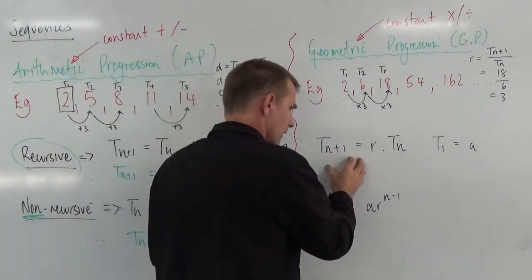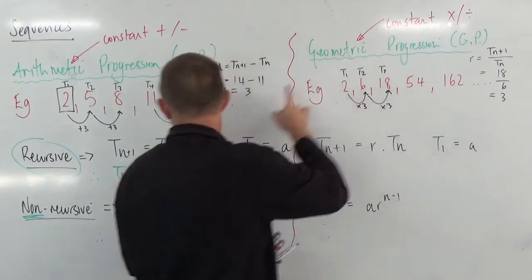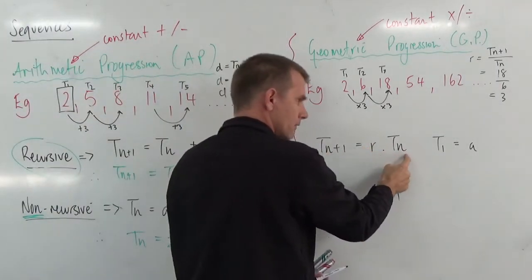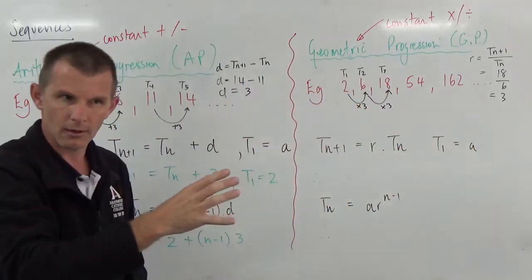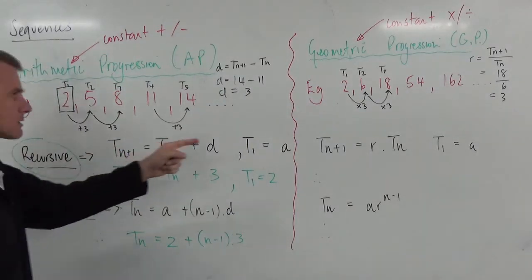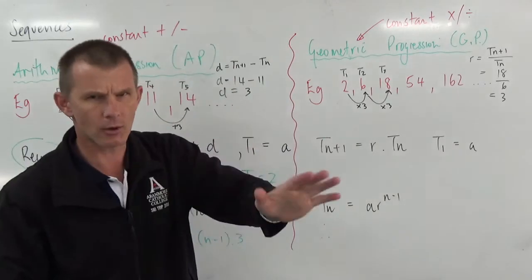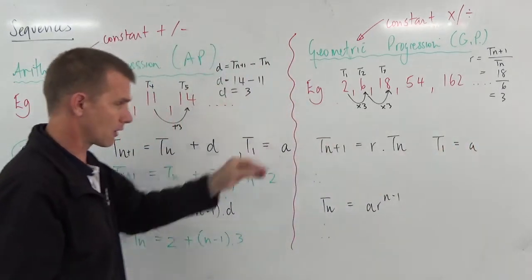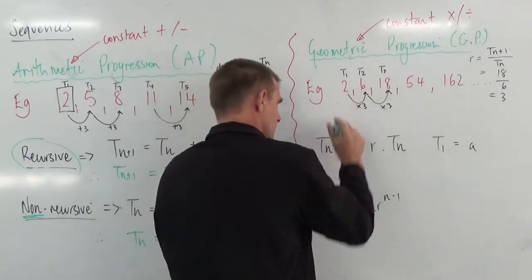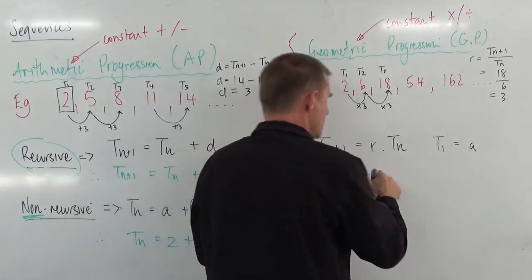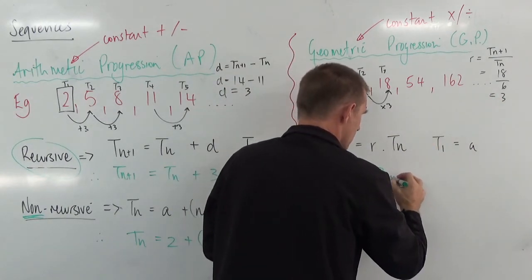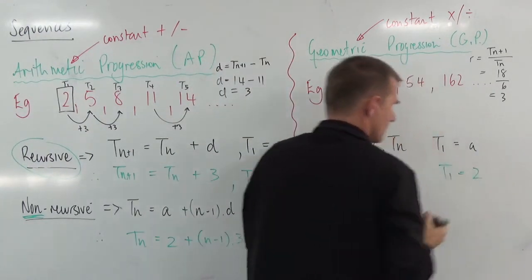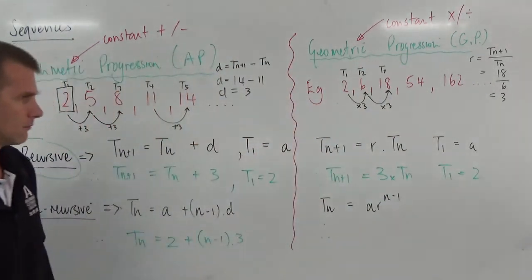Notice how it's referring to the term before, and therefore I've got to give a starting term. Any recursive formula must have a starting term. Always. These questions in exams. One mark will be for this, one mark for this. You miss this out, you only get 50% in the question. You've got to keep that in there. So, in this sequence here, I would write T_{n+1} equals R, common ratio, 3 times T_n, and T1 equals 2. That is my recursive formula.